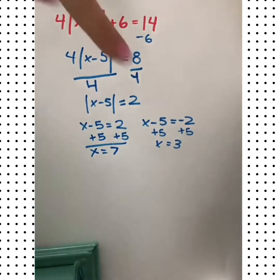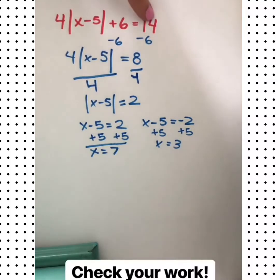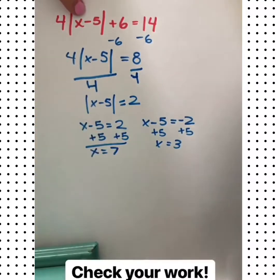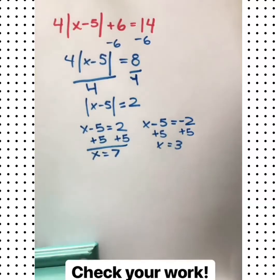We can make sure we did everything correctly by plugging them back in. 7 minus 5 is 2, the absolute value of 2 is 2, 2 times 4 is 8, plus 6 is 14. Now let's plug in 3: 3 minus 5 is negative 2, the absolute value of negative 2 is 2, 4 times 2 is 8, plus 6 is 14.